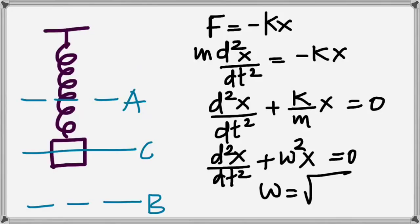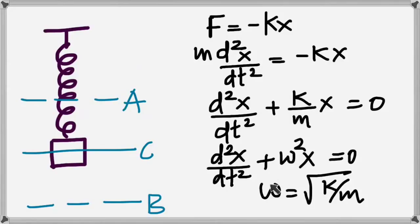Omega (ω) — where did we first hear about it? In circular motion. It is angular velocity, otherwise called angular frequency, and ω = 2π times the linear frequency. So it's the same omega appearing here. I've decided to use ω² = K/M, therefore ω = √(K/M).